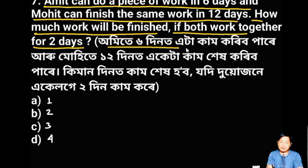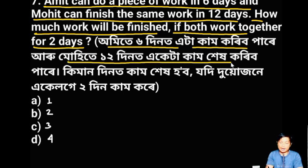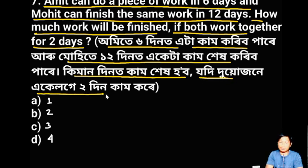Amit can do the work in 6 days. Muhit can do it in 12 days. How many days of work can be done if both work together for 2 days — both together finishing the work?